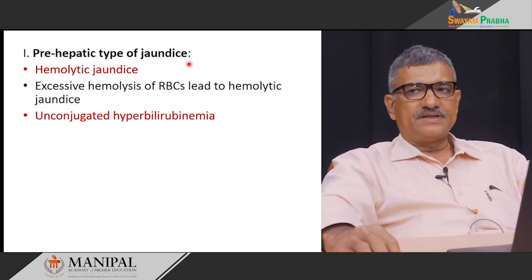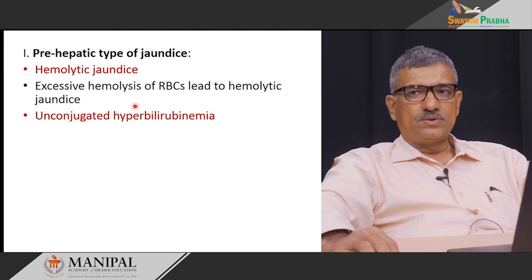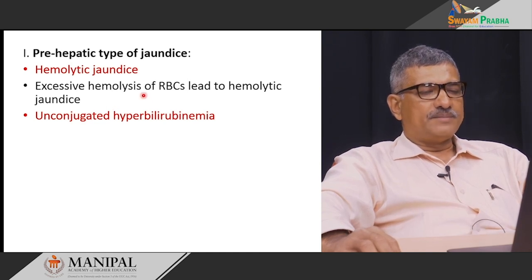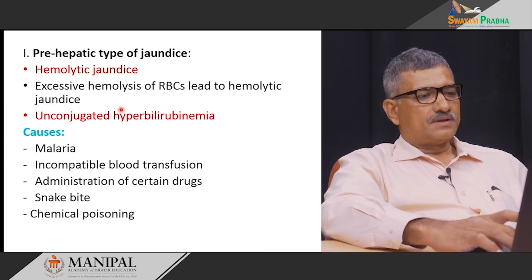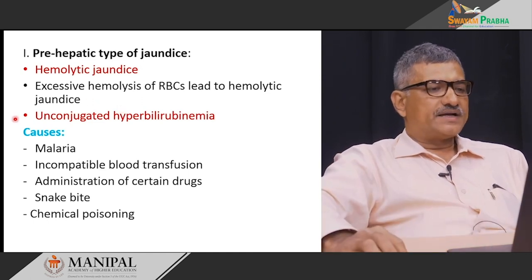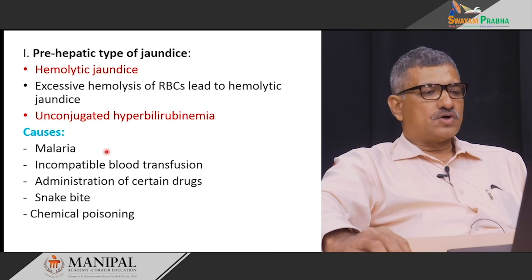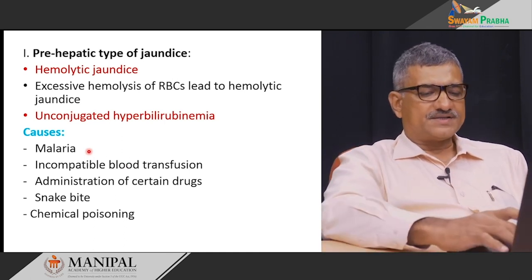The first type, pre-hepatic or hemolytic jaundice, is caused by excessive hemolysis of RBCs, leading to the release of large amounts of unconjugated bilirubin into the bloodstream. For this reason, pre-hepatic jaundice is also known as unconjugated hyperbilirubinemia. Causes include malaria, incompatible blood transfusion, administration of certain drugs, snake bite, and chemical poisoning — all of which lead to excessive hemolysis of RBCs resulting in increased plasma bilirubin levels.